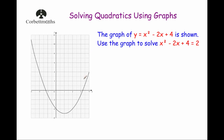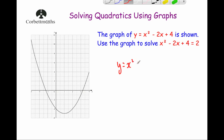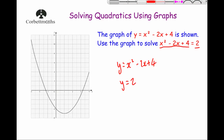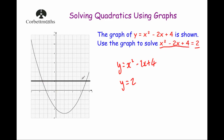Just to recap what I covered at the end of the last video: here we've got the graph of y equals x squared minus 2x plus 4. We can use this graph to solve an equation such as x squared minus 2x plus 4 equals 2. If you've got the graph of y equals x squared minus 2x plus 4 — the graph of the expression on the left-hand side — and you've got that equal to 2, you draw the graph y equals 2 on the same axes. So y equals 2 is the horizontal line passing through 2 on the y-axis. To find the solutions, you find where those two graphs meet.